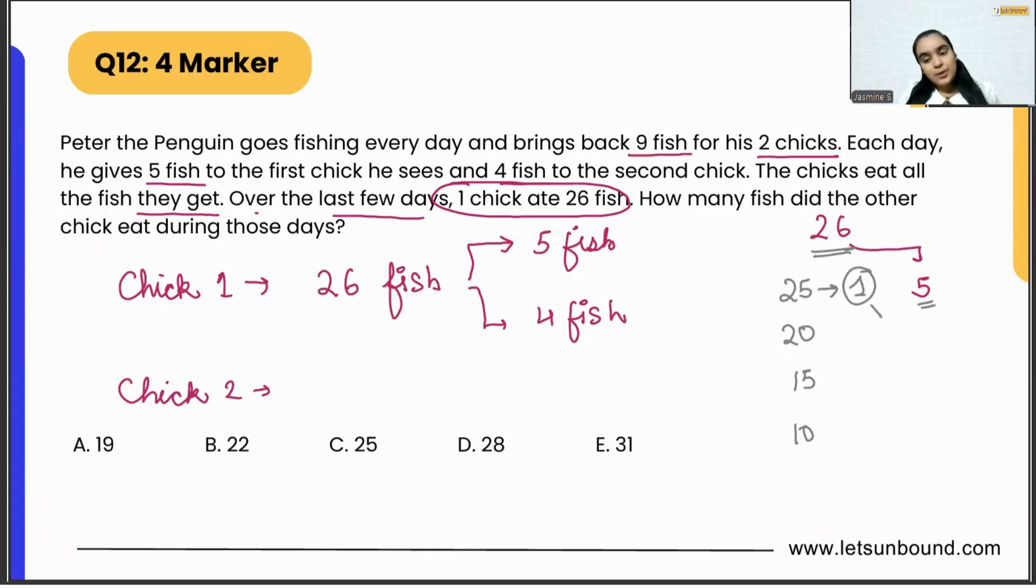So that means we cannot do this, because either they can get five fishes or they can get four. Whatever answer we are going to get, the remaining fishes should be divisible by four. So if the chick is getting five fishes to eat, the other days the chick should get four fishes to eat.